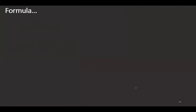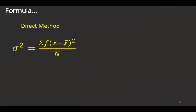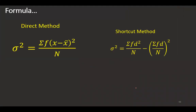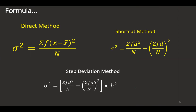We are going to use three formulas here: one is for the direct method, another one is for the shortcut method, and another one is for the step deviation method. Step deviation method is not so popular here. So all three examples, we are taking the given sum as the population.